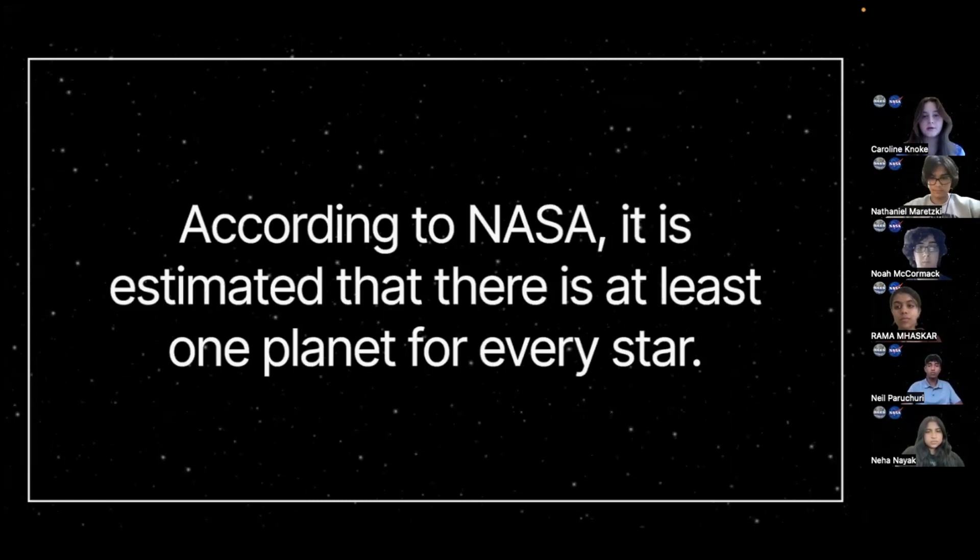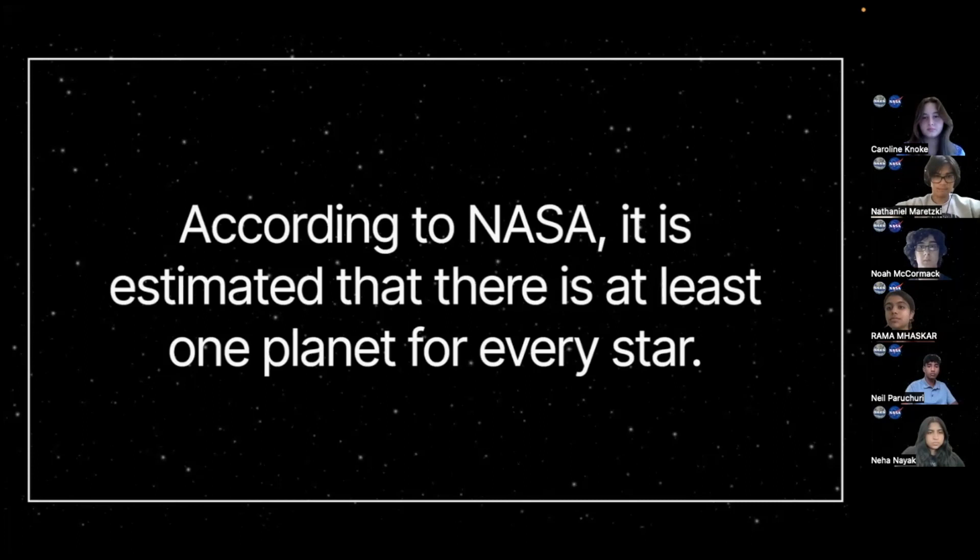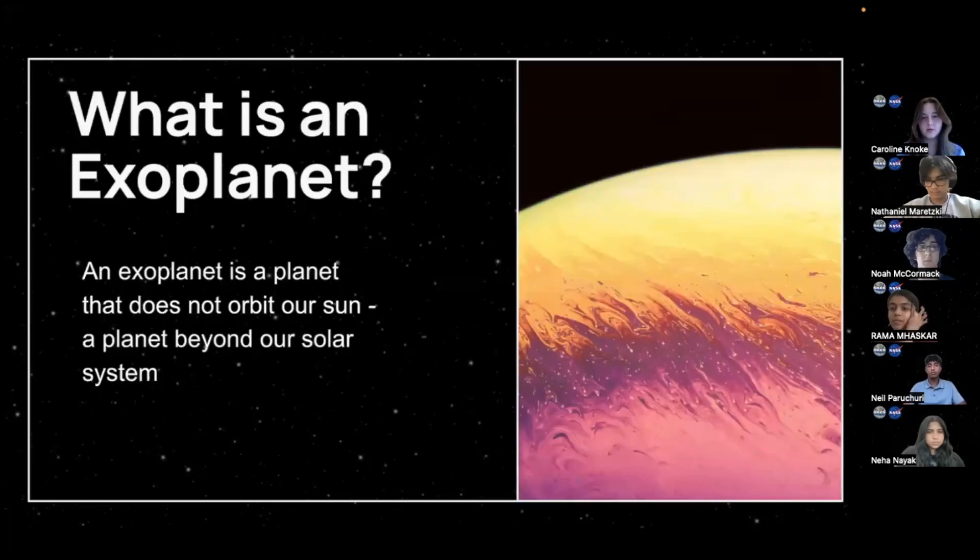To begin, I'm going to start with an interesting fact. According to NASA, it is estimated that there is at least one planet for every star. A bit of background information, what exactly is an exoplanet? An exoplanet is a planet that does not orbit our sun, a planet that is, in other words, beyond our solar system.